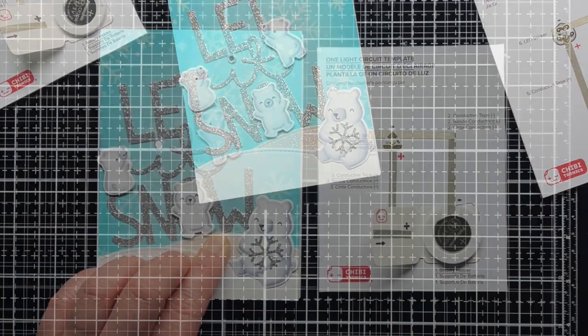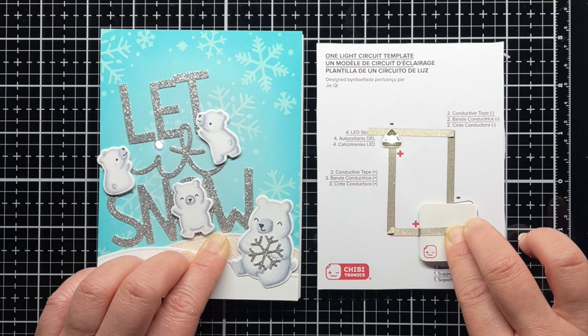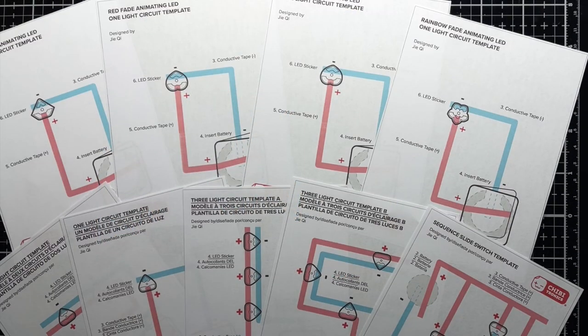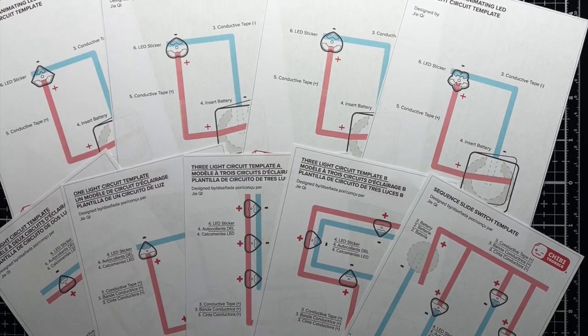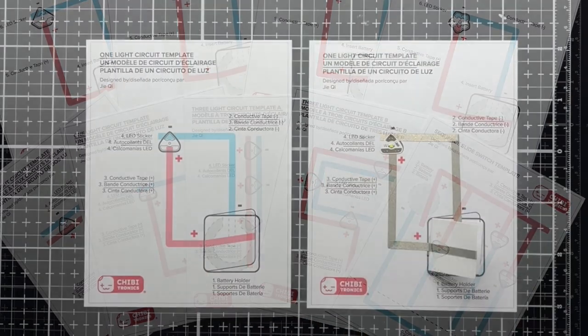Once you've created your first one light circuit, you can check out these additional templates available on our website. Just follow the same process you used for the one light circuit to add additional lights and effects. We have a two light version, two different three light versions.